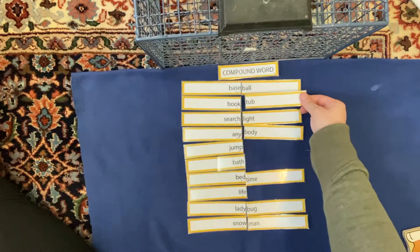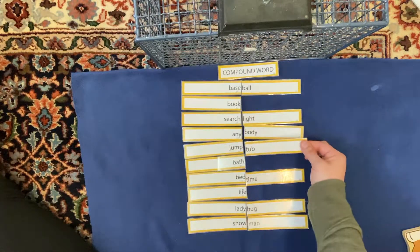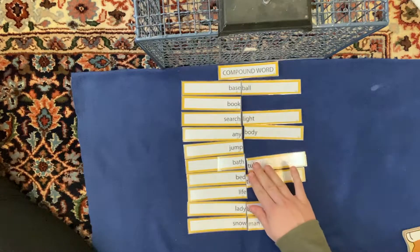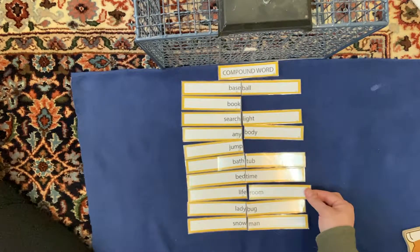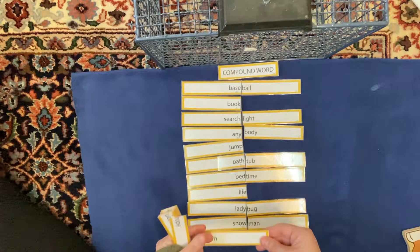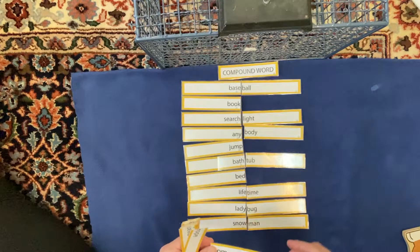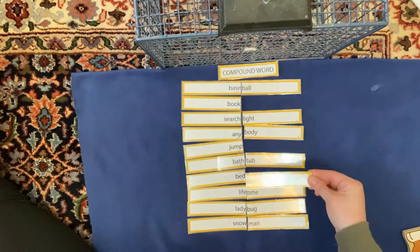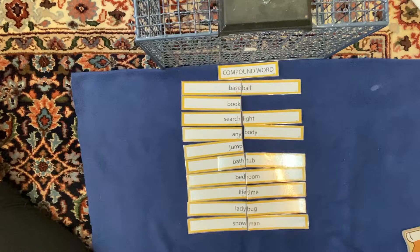What about this one? Book tub. No. That'd be weird. Jump tub. Bathtub. There we go. Book room. Jump room. Life room. Oh, dear. None of those work. What if we did this? Can we say lifetime? Like, it's been a lifetime since I've seen you. And then we could do this. Bedroom. How does that look? I think that's good.